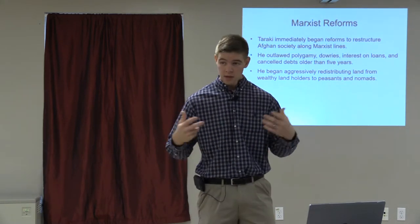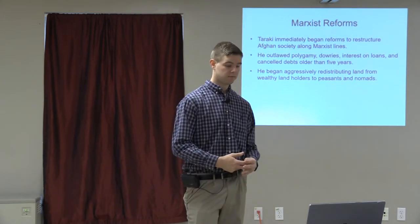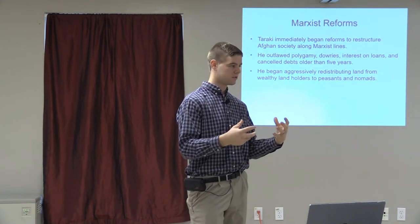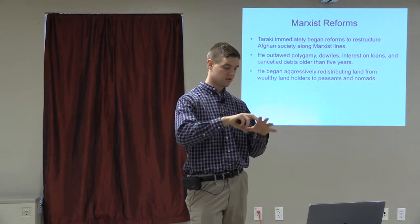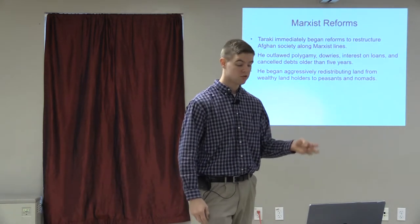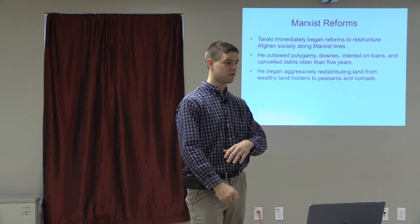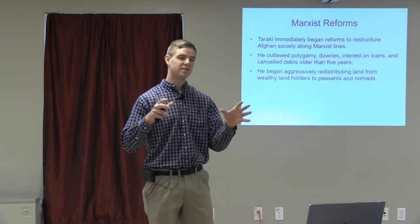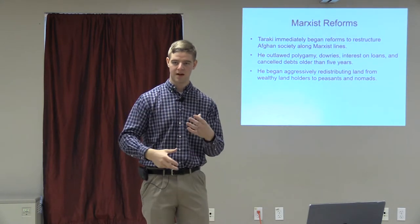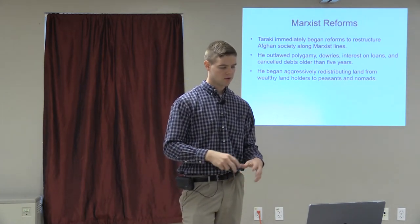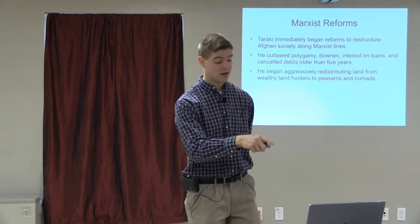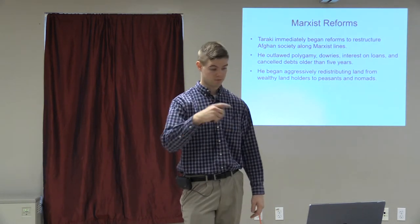Taraki started introducing Marxist reforms. First, he broke down traditional social structures to reconfigure things along Marxist lines. He outlawed polygamy, dowries, and interest on loans, and canceled all debts older than five years — an attack on the feudal system of wealthy landholders and peasants. He also began aggressively redistributing land from wealthy landholders to peasants and nomads. Some of these reforms, like banning polygamy, were the very things that had gotten Amanullah Khan kicked out 40 years earlier.